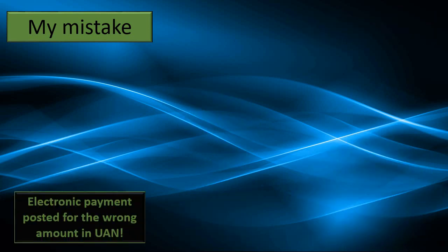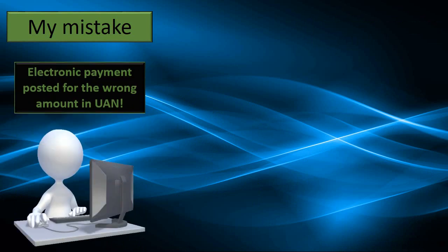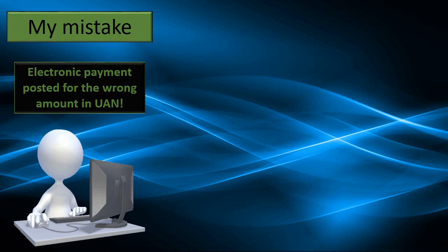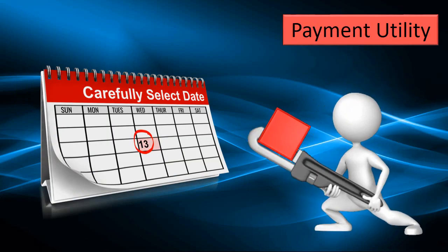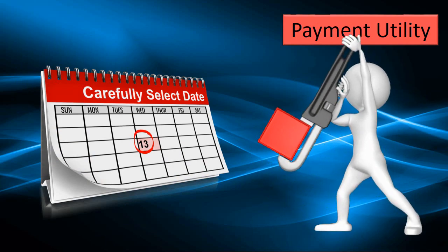If it's my mistake, it's an electronic payment that I posted for the wrong amount in UAN. That means I authorized money to come out of our bank account — maybe a utility bill that automatically pulls out, or an online payment or some other form of automatic payment. When I posted the voucher in UAN, it should have matched the amount I authorized but it doesn't. I made a mistake and I need to correct that. I would use the payment utility to adjust the electronic payment to match, using the date of the original electronic payment.